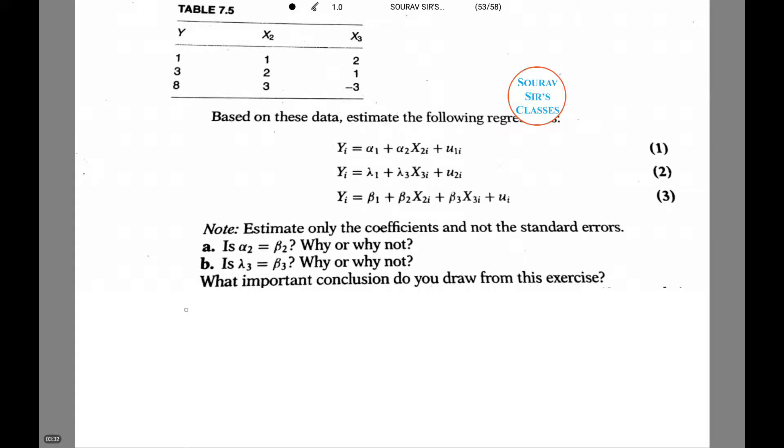Now let's calculate alpha 1 hat first. This is equal to minus 3. Alpha 2 hat equals 3.5. Lambda 1 hat equals 4.